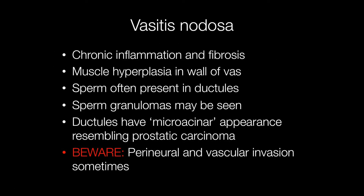Vasitis nodosa is characterised by chronic inflammation and fibrosis of the vas deferens. The muscle is hyperplastic and sperm are often seen in the proliferating ductules. In addition, sperm granulomas may be seen.